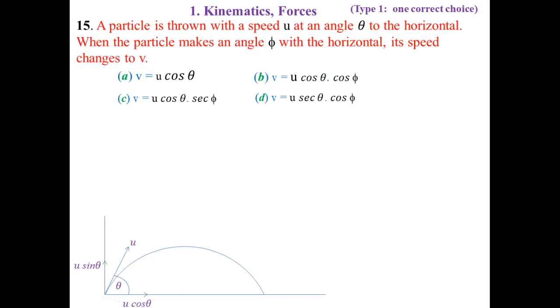But the question here is, when the particle makes angle φ with the horizontal. Now, here we can mark a point on the path. When the particle comes from here, then the horizontal angle changed. How much was the horizontal angle? Theta. But now, we connect this point with a line. The angle is φ. The new speed is v. And the new angle is φ.